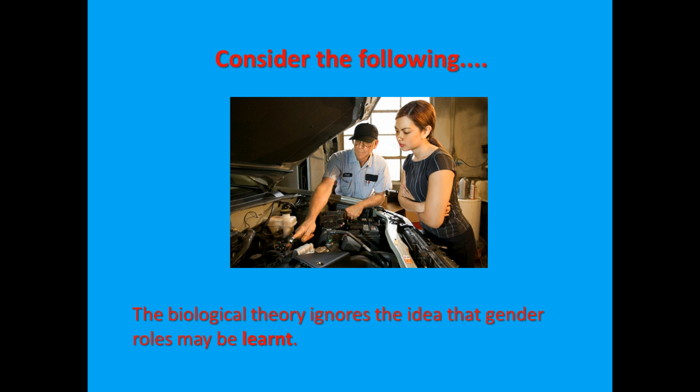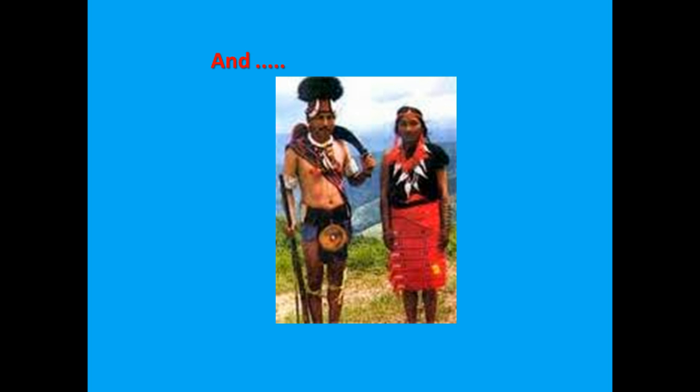Consider a little girl growing up helping her dad fix cars. When she is older, she fixes and races cars for a living. Where has her gender role come from? Could it be learnt rather than biology? In this tribe, both men and women hunt for food. The biological theory does not explain how gender roles change over time or across cultures, despite human biology being the same. In other words, it ignores the social aspect of gender.